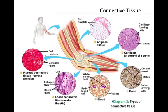Connective tissue binds and supports other tissues. There are six major types of connective tissues illustrated in Diagram 3. Loose connective tissue is the most common connective tissue found in the human body; its matrix is a loose weave of fibers. Many of the fibers consist of the strong rope-like protein collagen. Here we see loose connective tissue binding skin to muscles.